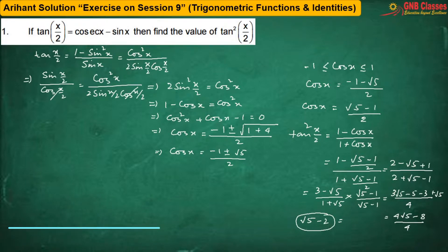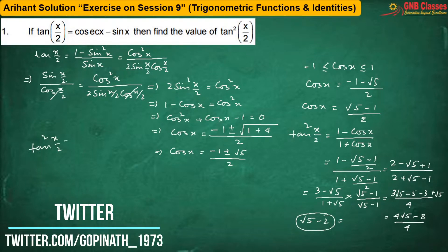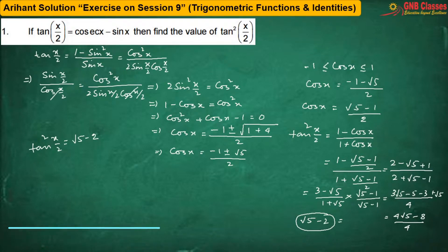So we are having √5 − 2 as the final answer. Therefore, the value of tan²(x/2) is nothing but √5 − 2. Let us move for the next problem.